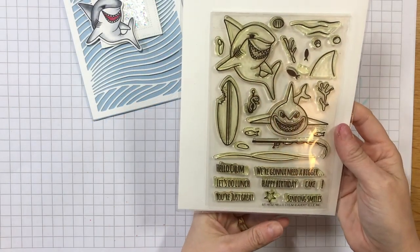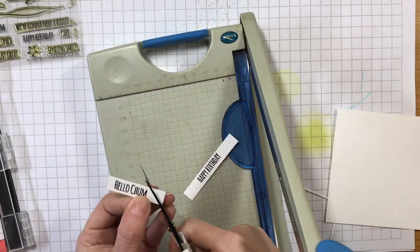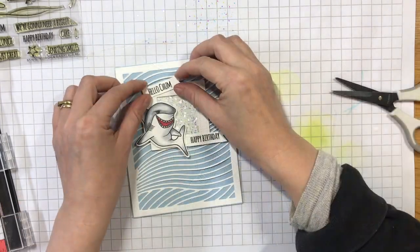To finish, I stamped the sentiments from the Hello Chum set and cut them into small banners before gluing them onto the front frame of the card.